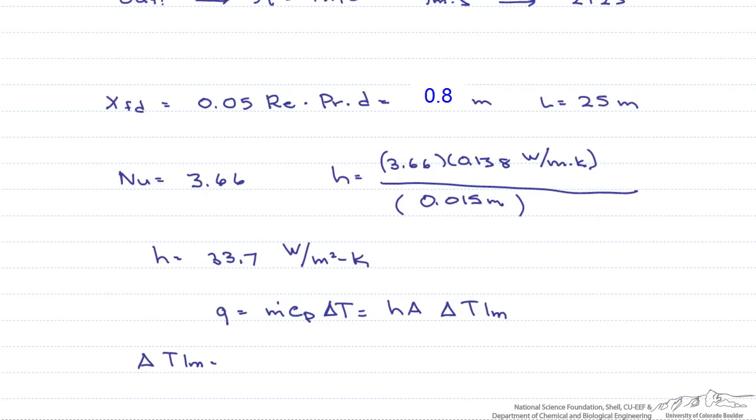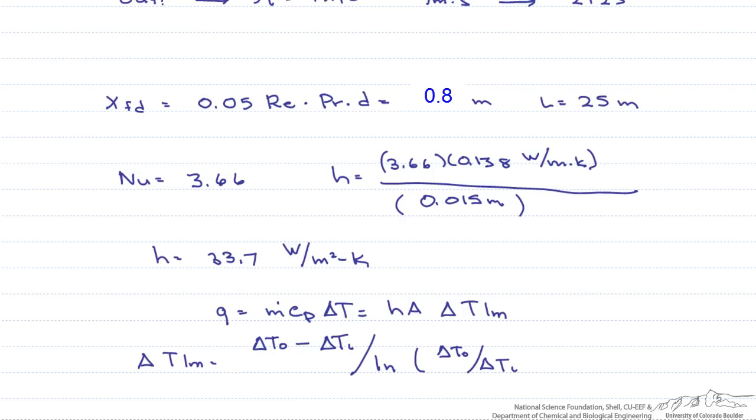Our delta T log mean is equal to our delta T out, which is the difference between the surface temperature and the temperature coming out, minus our delta T in, all divided by the natural log of our delta T out divided by delta T in. We can rearrange this to solve for our temperature out, which is going to equal our surface temperature, minus our surface temperature minus Tm in,